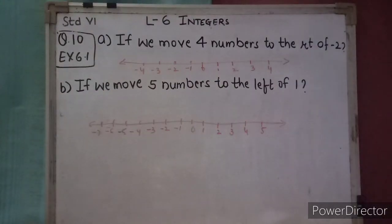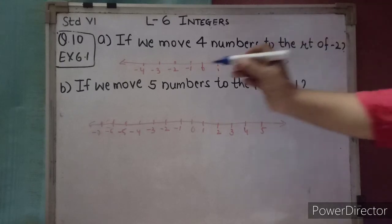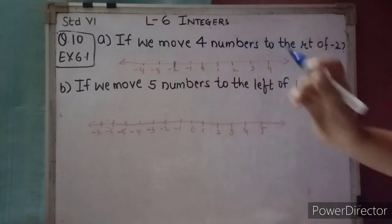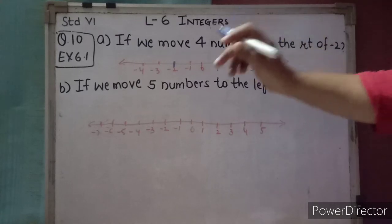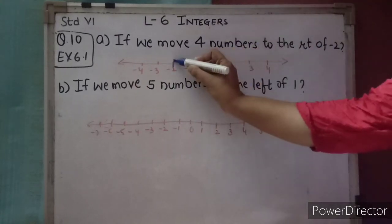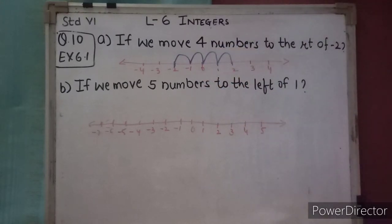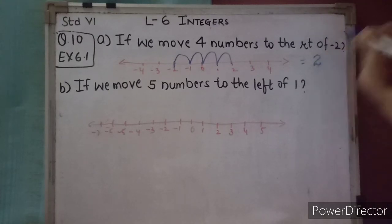Question number 10: Draw a number line and answer the following. Which number will we reach if we move 4 numbers to the right of minus 2? We start at minus 2 and move 4 steps to the right: 1, 2, 3, 4. We will reach at 2.